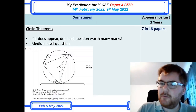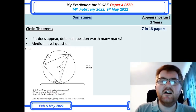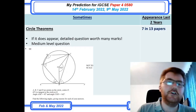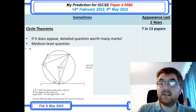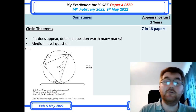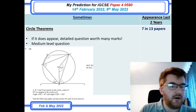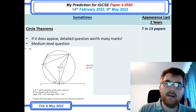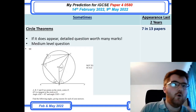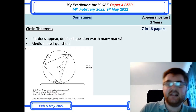Let's go on to my sometimes topics — seven appearances and above. The first one is circle theorems, which almost made the cut on Paper 2 as well. If it does appear, it's going to be a detailed question worth many marks, generally at a medium level in the middle of the paper. Make sure you've revised the alternate segment theorem and all the different theorems — about seven in total — that you need to know.